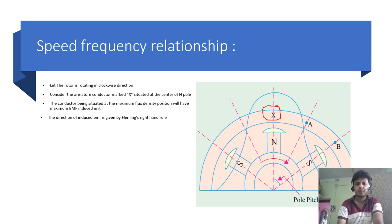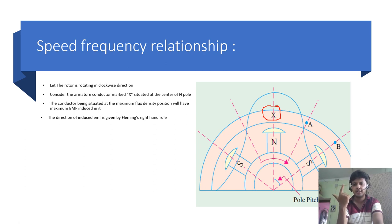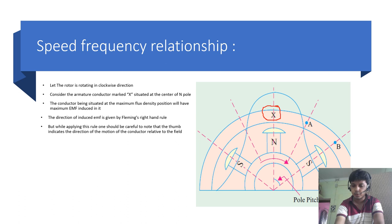The direction of induced EMF is given by Fleming's right-hand rule. In Fleming's right-hand rule, the thumb indicates the direction of the rotation of the conductor, the index finger indicates the direction of the field, and outside a magnet the field starts from the N-pole and finishes at the S-pole, while the middle finger indicates the direction of the induced EMF. One should be careful to note that the thumb indicates the direction of the motion of the conductor relative to the field.